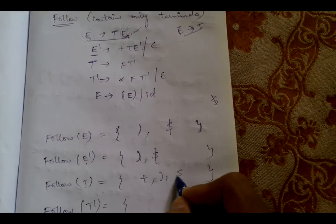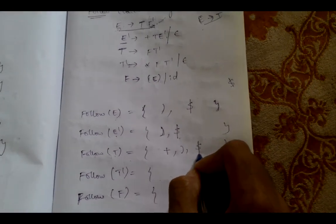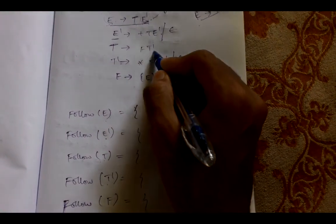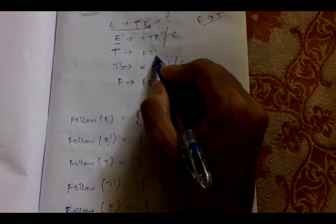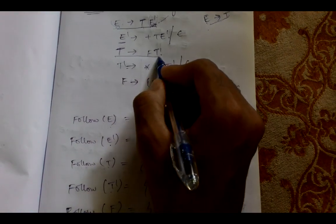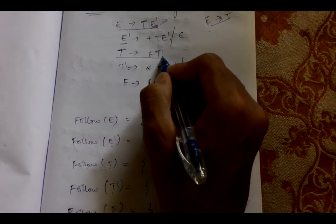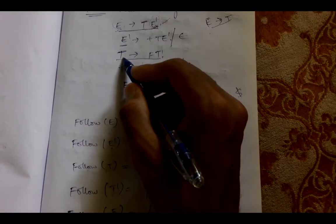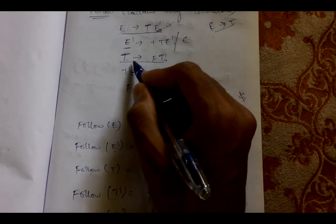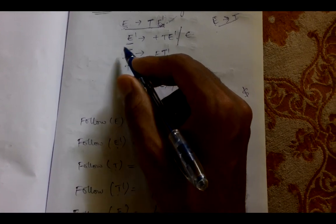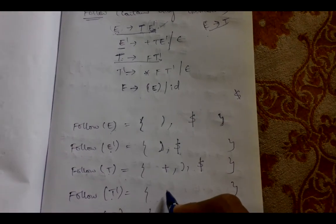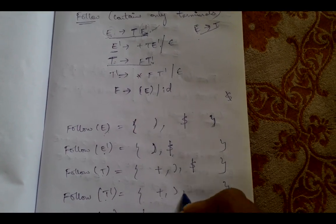Now calculating follow of T'. We need to find T' in the right hand side of the grammar. T' appears here and is at the end of this production. Whenever a non-terminal is at the end of a production, the follow elements of the left hand side are placed in the follow of T'. The left hand side is T, so follow of T elements — plus, closing bracket, and dollar — are placed in follow of T'.